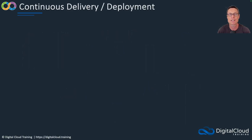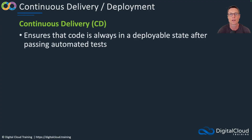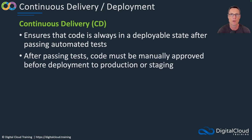The next stage of CI/CD is continuous delivery and continuous deployment. This is about how we release the updated code through to our environments, whether those are test environments or production environments. Continuous delivery ensures that code is always in a deployable state after passing automated tests. After passing the tests, the code is manually approved before deployment to your environment — whether that's production, staging, or test. We put a gate in front of the actual deployment; we want some kind of manual check before we actually release the code in case it causes any issues.